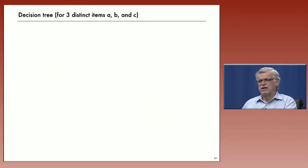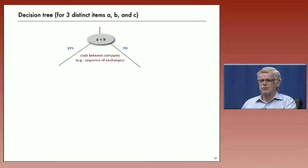So, here's the basic idea for proving a lower bound for sorting. Let's say we have three different items, A, B, and C. Whatever algorithm we have is gonna first do a comparison between two of the items. Let's say they're A and B.